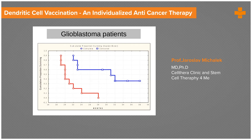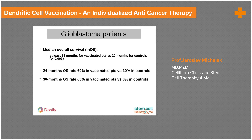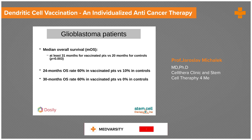Here are the results shown on a Kaplan-Meier curve. You can see the standard treatment outcome with initial radiotherapy combined with chemotherapy with temozolomide, continued with temozolomide — those patients had an unfortunate outcome. On the other hand, we still have survivors among patients who received dendritic cell vaccination. The median overall survival was at least 31 months for vaccinated patients versus 20 months for controls. The two-year overall survival rate was 60% compared to 10% in controls.